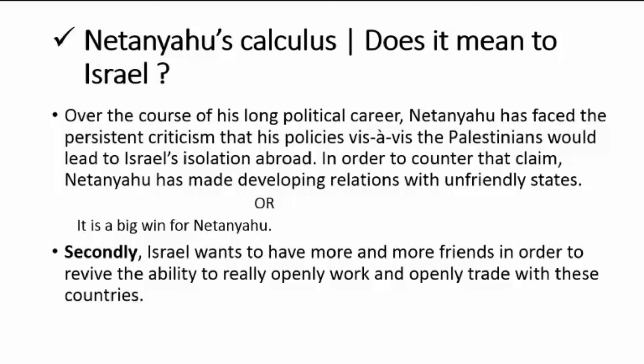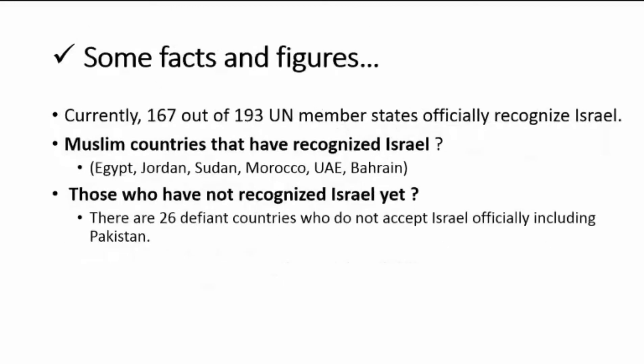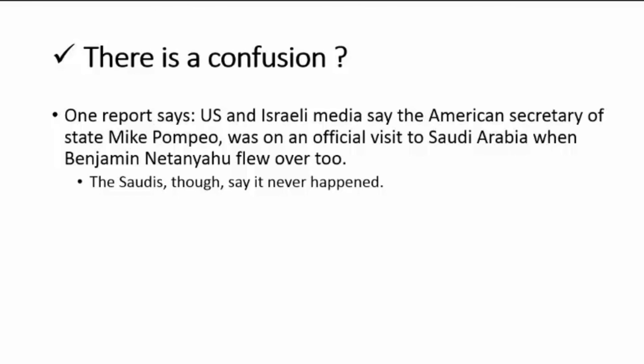Here are some facts and figures. Currently, 167 out of 193 UN member states officially recognize Israel. Six Muslim countries have recognized Israel as a state so far: Egypt, Jordan, Sudan, Morocco, UAE, and Bahrain. On the other hand, 26 countries do not officially recognize Israel, including Pakistan.